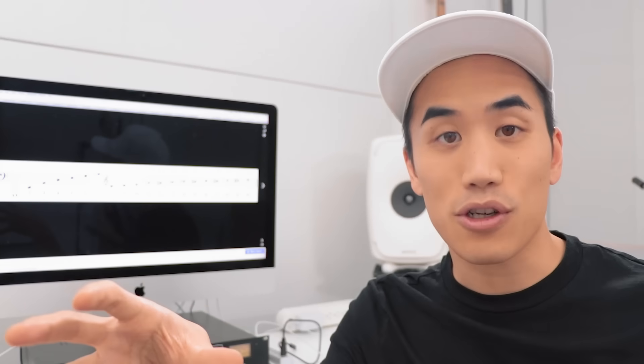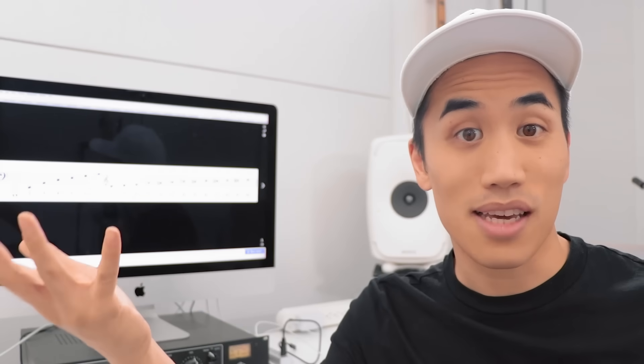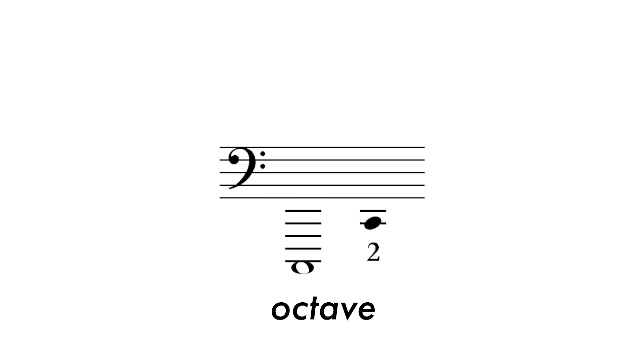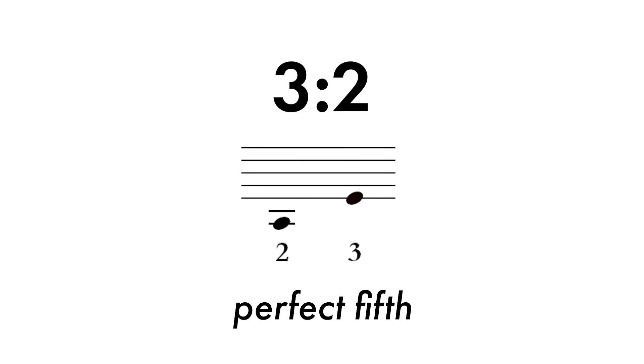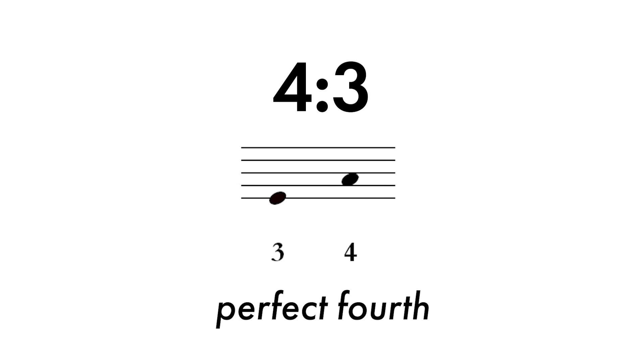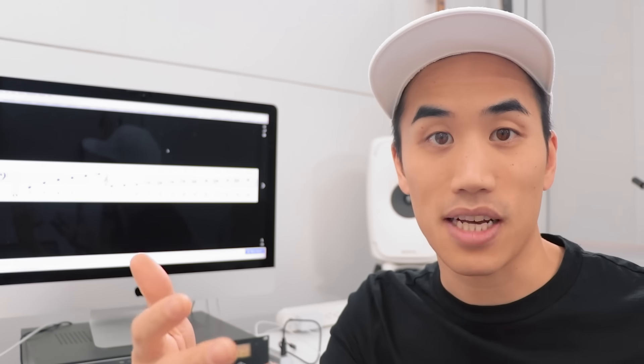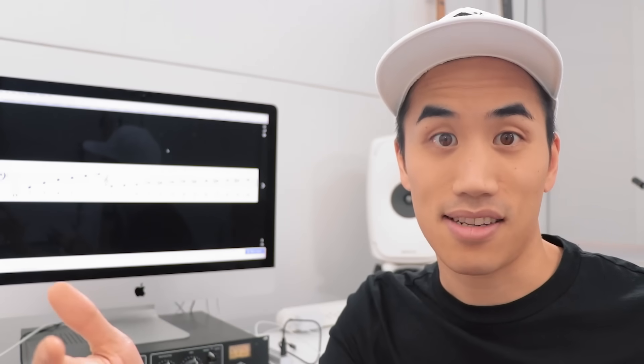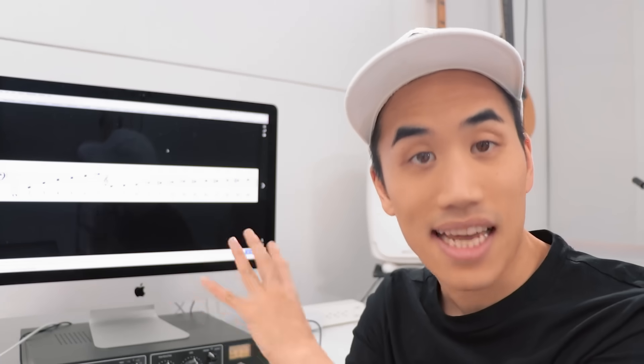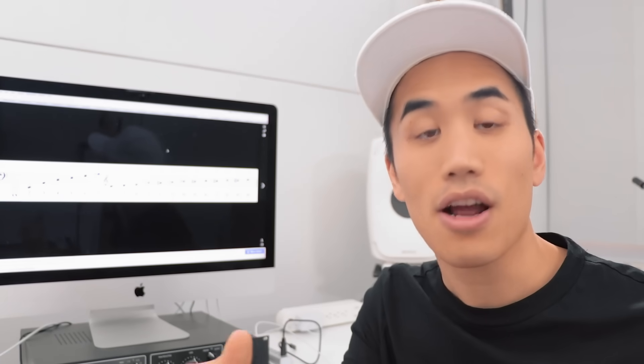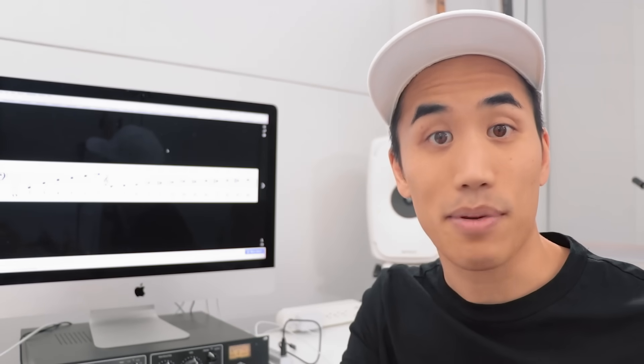And the reason why these intervals sound good together is because our ears are doing math. An octave is two notes vibrating at a two to one ratio. The next simplest whole number ratio is a perfect fifth, three to two. A perfect fourth is a four to three ratio. Notes sound consonant, they sound nicely harmonized to us when the math is the easiest. Not only that, but when two notes related by this series are played together, they will share a lot of overlapping overtones.